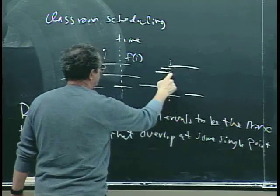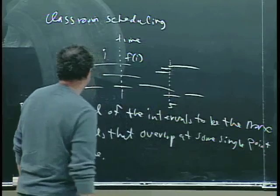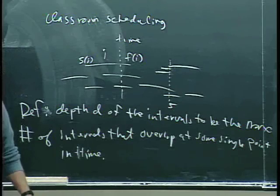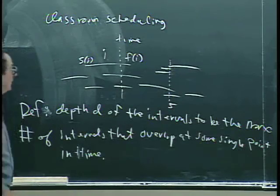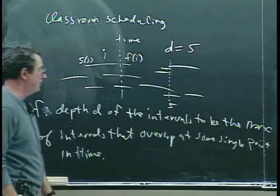Here's one, one, two, three, four, five. And that's, I think that's the most you can overlap at any given point in time. And so D in this little example is equal to five. The depth equals five.